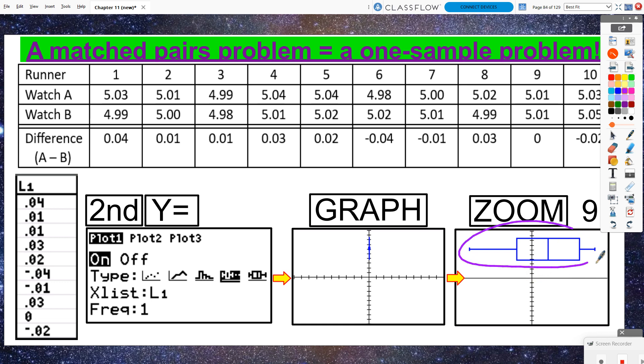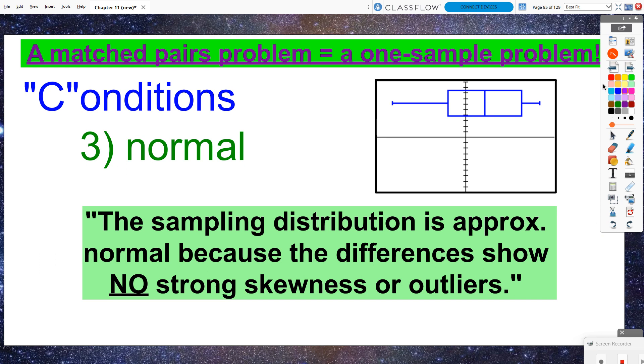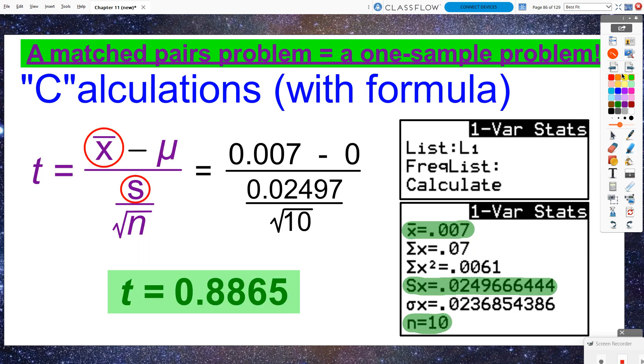You can tell based on this box plot, there are definitely no outliers. And there's some skewness, but not a strong amount of skewness present. So in the end, I can state the sampling distribution is approximately normal because the differences show no strong skewness or outliers. And I draw a picture of it on my paper. I don't need to draw the x and the y axis like my calculator screen would show me. Just draw the best as you can what that box plot looks like.